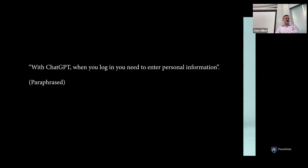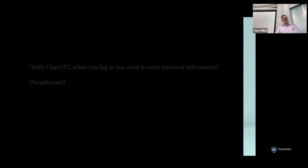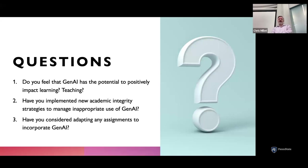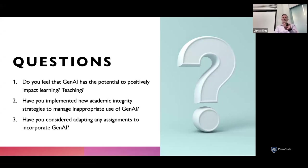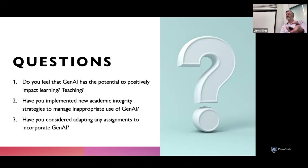The types of information you put into these systems can be sensitive. That's why I think general counsel has been taking so long to come to a decision — the way people engage with these systems might be divulging data about you that gets incorporated into the models. There are concerns about logging into these systems and how they collect data, and typical privacy concerns that are exacerbated by the nature of how you interact with these systems.